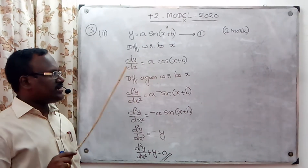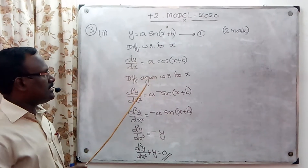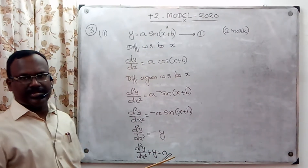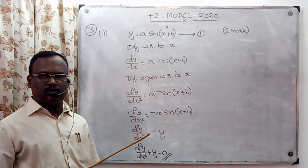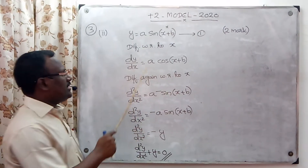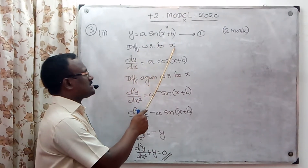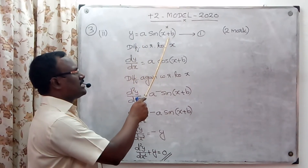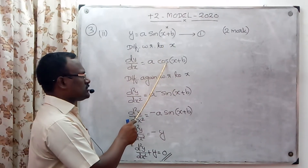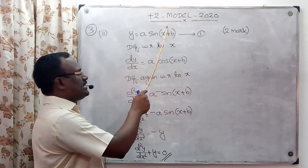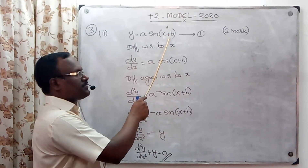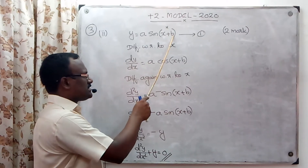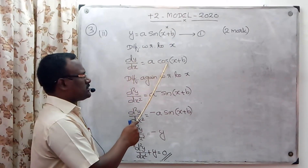We have to form the differential equation. Differentiating with respect to x: dy/dx is equal to a times the derivative of sin(x+b), which gives dy/dx equal to a·cos(x+b), since the derivative of sin is cos and the derivative of b is 0.